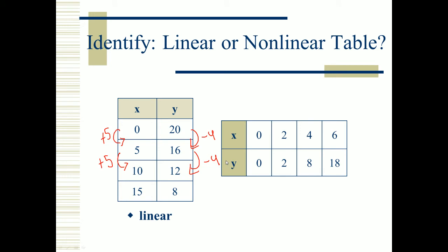Try this next one — the table is just flipped horizontally. See how it's changing. Here's the answer: it's nonlinear because although X is changing by adding 2 each time, Y is changing differently — it adds 2, then adds 6, then adds 10.